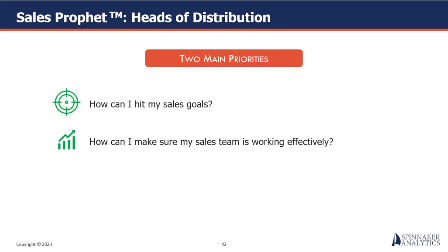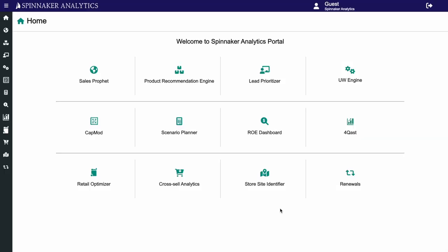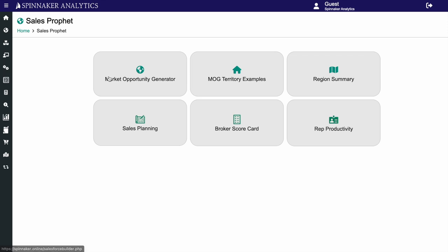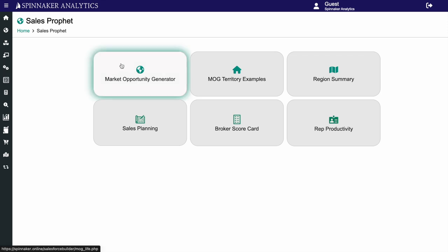For heads of distribution, two main priorities are: how can I hit my sales goals, and how can I make sure my sales team is working effectively? Spinnaker can help. Our user-friendly interface makes it easy to navigate the various areas.